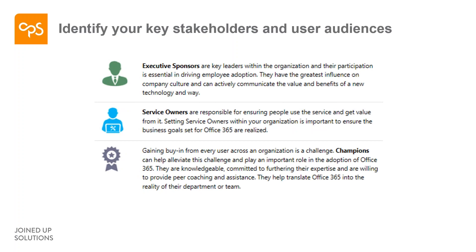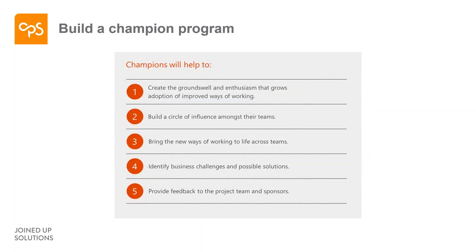We need to understand who our executive sponsors are, and messaging about why we should be using Teams should come from those executive sponsors. We also need our champions network so they can help people make the adjustment to using Teams. Building a champion program is important — making sure people across the business know about Microsoft Teams, know how to use it, and know how to generate interest with Teams. Creating enthusiasm around the business is important, trying to influence people and show them how they can work with Teams and how that can make their day-to-day work life better.